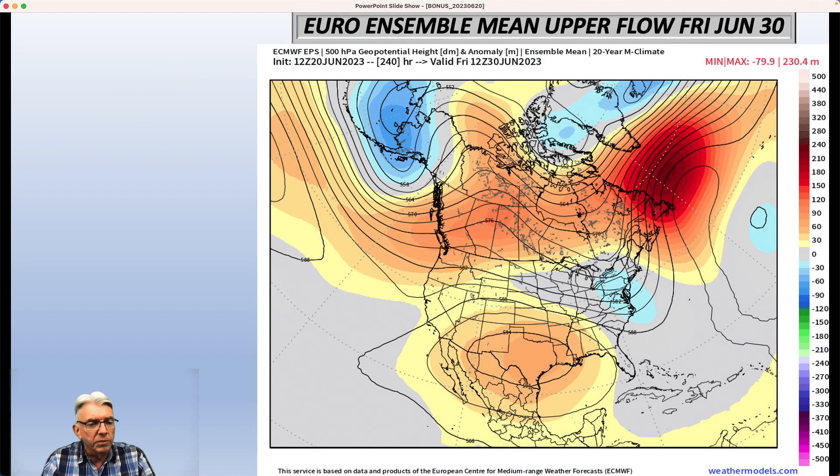So in the basic daily weather update today, I showed these two graphics I'm about to show you now. This is the European Ensemble mean upper level flow for June 30th and this trough that's now sitting here, this cutoff low,